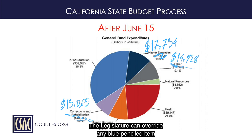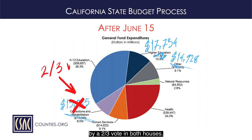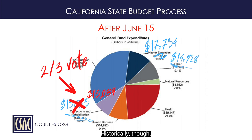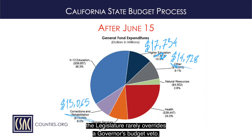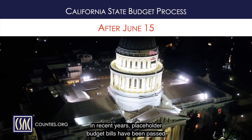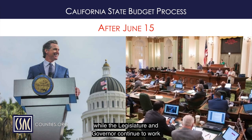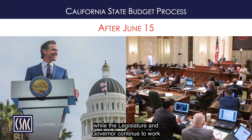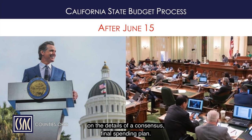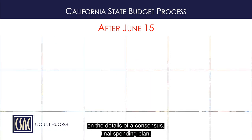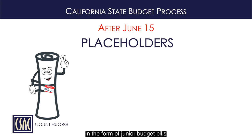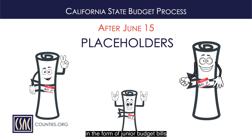The Legislature can override any blue-penciled item by a two-thirds vote in both Houses. Historically, though, the Legislature rarely overrides a Governor's budget veto. In recent years, placeholder budget bills have been passed by the June 15th deadline, while the Legislature and Governor continue to work on the details of a consensus final spending plan. Additional placeholder budget bills often come in the form of junior budget bills and trailer bills that amend the main budget bill that was passed by June 15th.